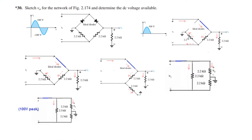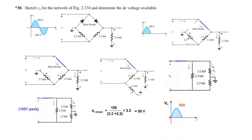Our input is 100 volt peak. By the voltage division rule, we are dividing equally between the 2.2 kΩ and 2.2 kΩ resistors. So V0 maximum equals 100 V peak divided by (2.2 + 2.2), multiplied by 2.2, which gives 50 volts. We can now plot it — for the first half cycle the output is 50 volt peak.